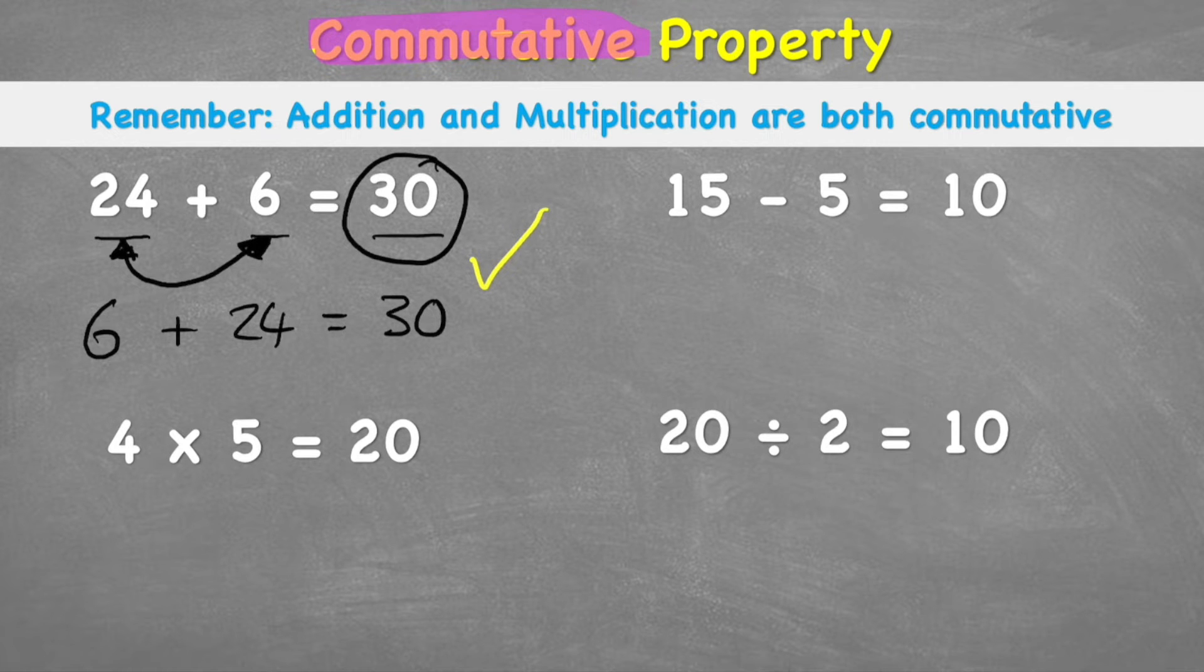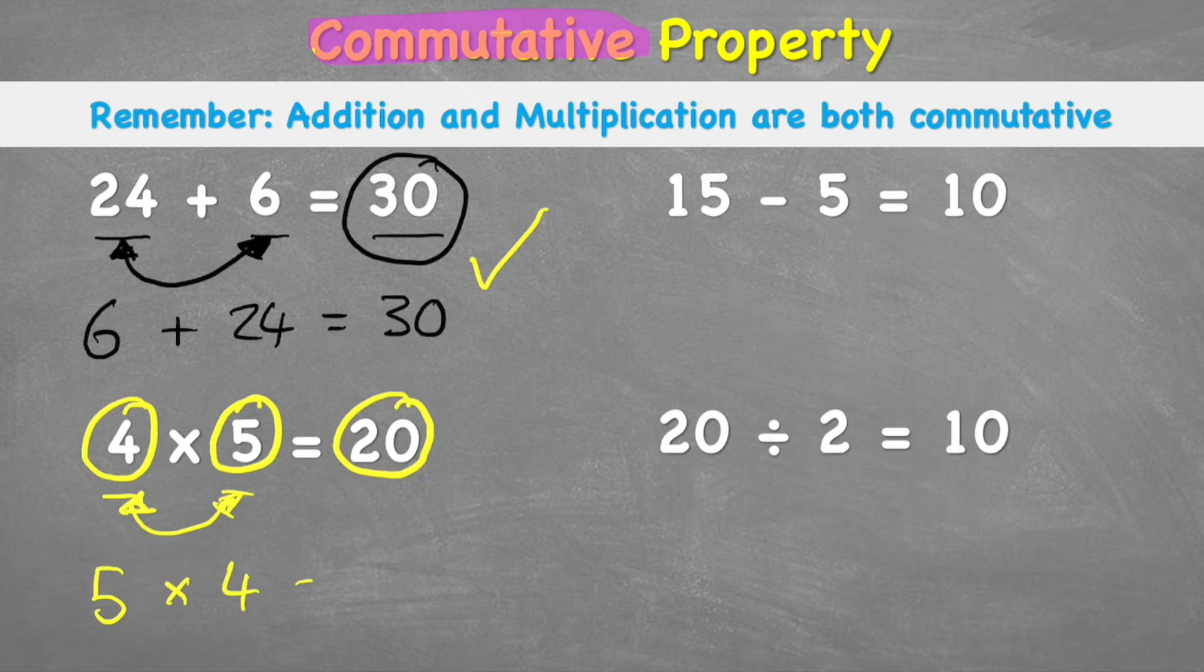Okay, let's have a look at this next question, which says 4 times 5 equals 20. Let's see if we can move these two digits around and get the same answer. So I'd have 5 times 4 equals, well, 5 times 4 also equals 20. So again, this question is commutative.